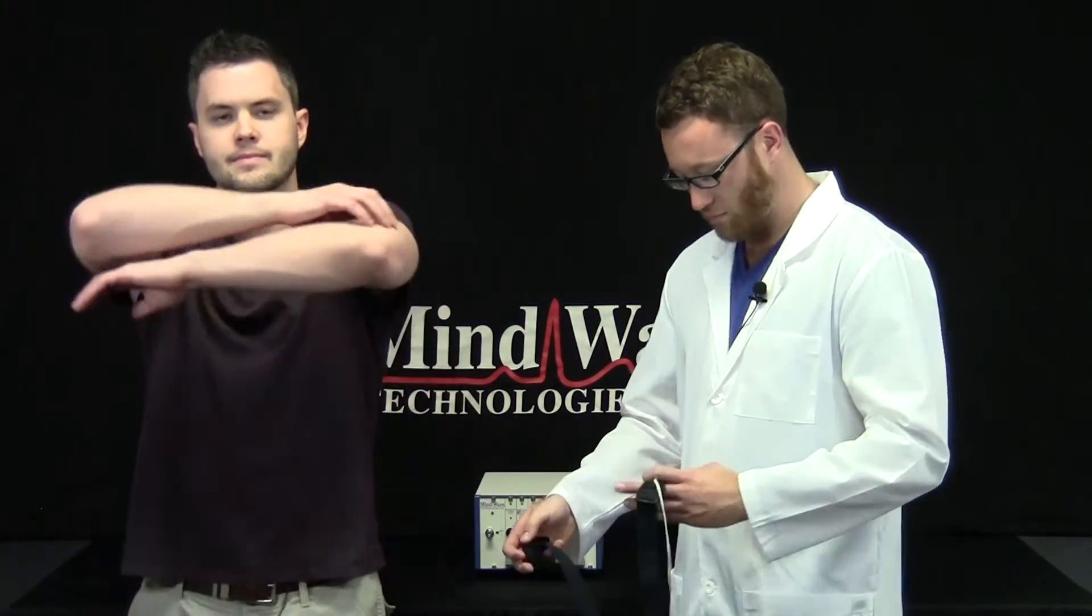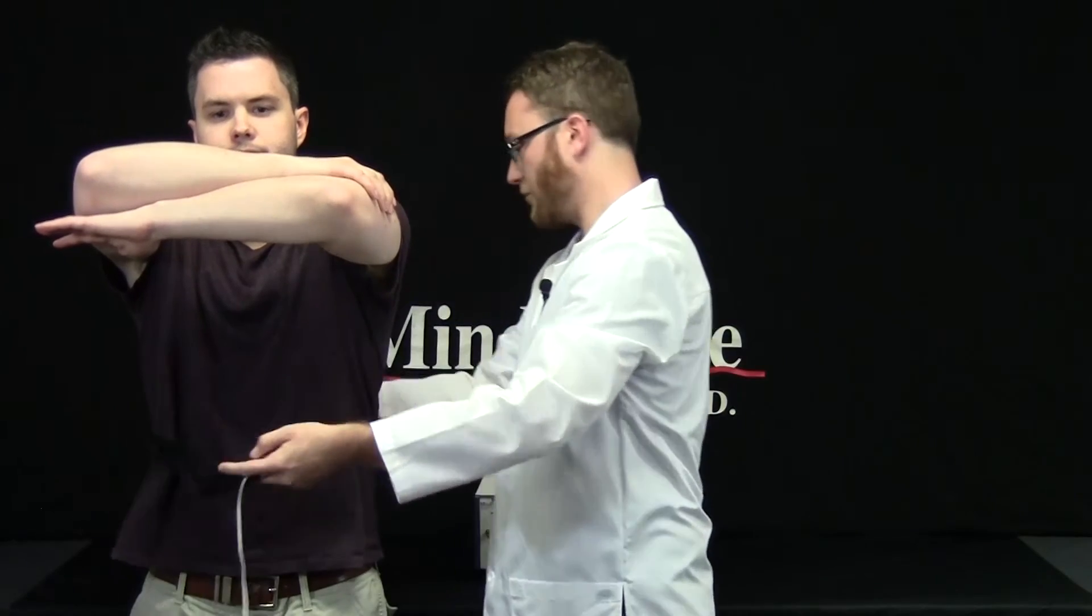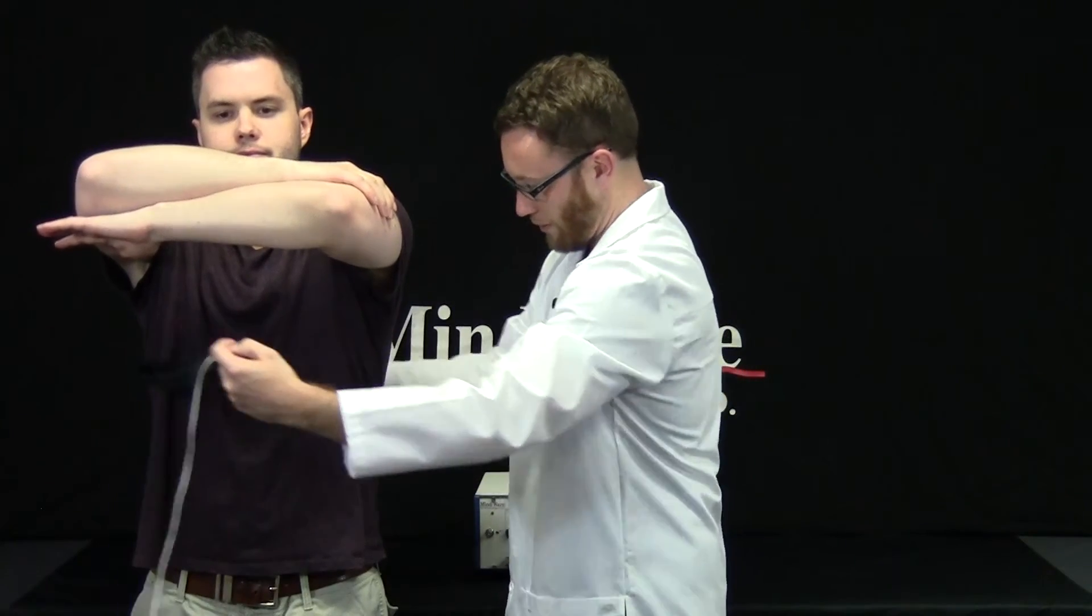Once you've determined the position of the rest belt, ask your subject to raise their arms and wrap the respiration belt around their torso.